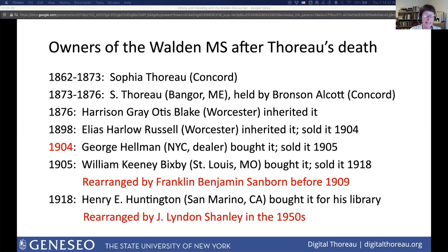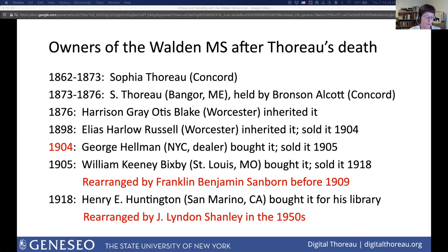In 1918, when Henry Huntington purchased the Walden manuscript, it was in the order Sanborn had imposed. It remained in that order until the 1950s, when Thoreau scholar Jay Leyda and Shanley rearranged it again, using the contents and physical features of the manuscript itself and evidence from Thoreau's journal to create groupings that reflected Thoreau's stints of work.